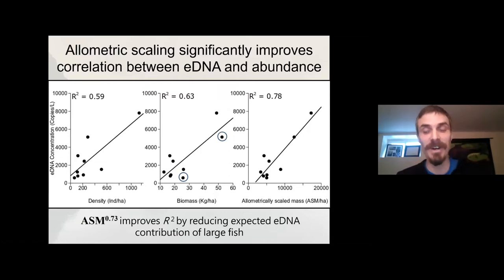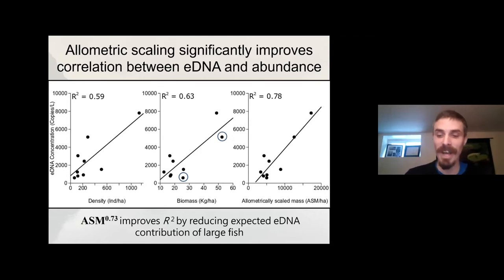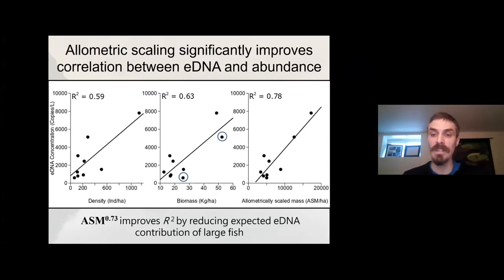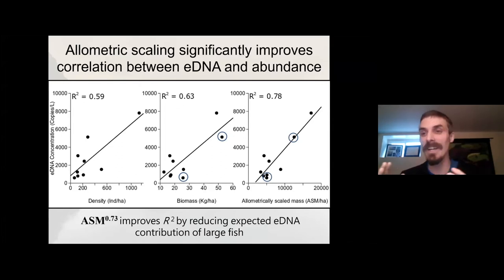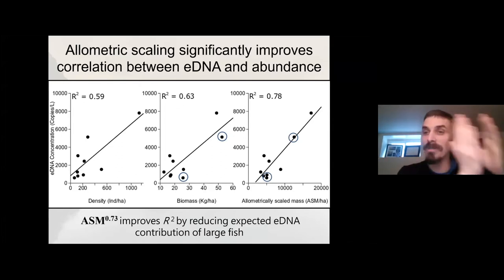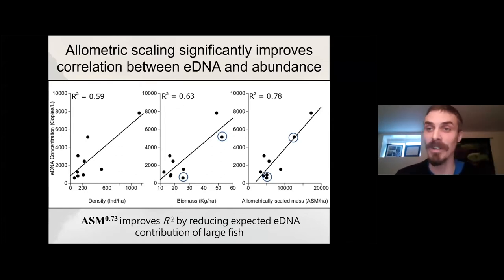Notably, those two lakes are the ones inhabited by large-bodied individuals. When we look over to our allometrically scaled mass eDNA relationship, you can see that using allometrically scaled mass penalizes those populations for having large-bodied fish, and in so doing shifts those points back towards the mean regression line.